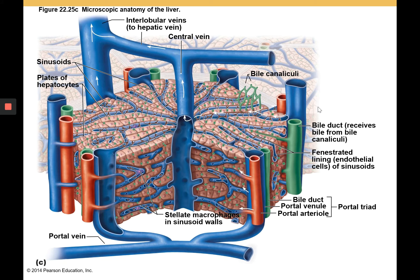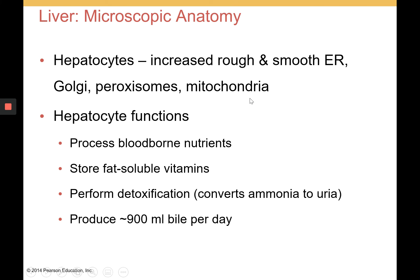Looking at the microscopic anatomy of one liver lobule: the central vein branches out to each side of the hexagonal lobule. At the corners are the portal triads — bile duct, portal vein, and hepatic artery — with bile canaliculi connecting to the bile duct. The hepatocytes themselves have abundant rough and smooth ER, a Golgi apparatus, peroxisomes, and mitochondria — everything needed to process blood-borne nutrients, store fat-soluble vitamins, make bile, and perform detoxification. They produce about 900 milliliters of bile per day.